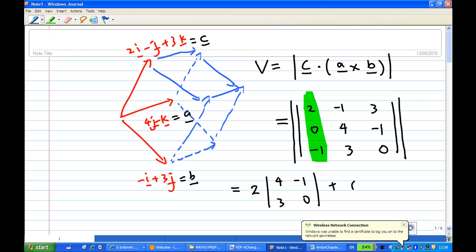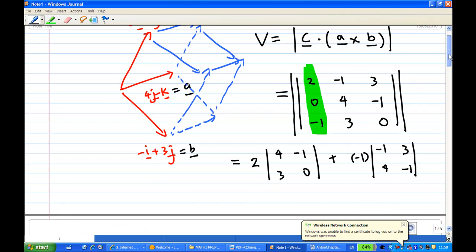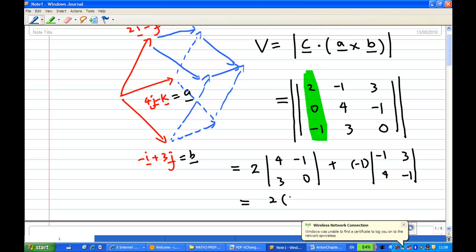So I'm going to get minus 1 times (minus 1, 4; 3, minus 1). That's 1 minus 12 which is minus 11, so 11 plus 6 you get 17. That means the volume is equal to 17.